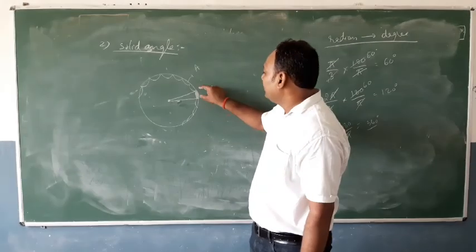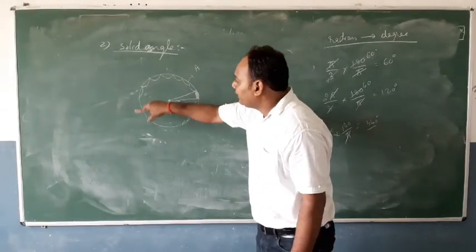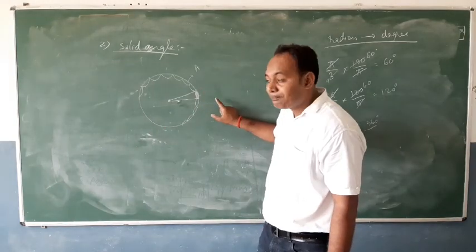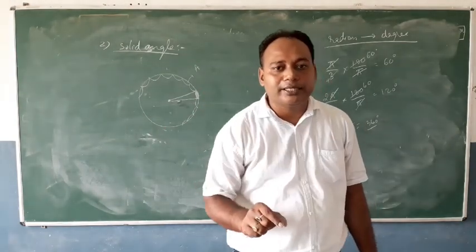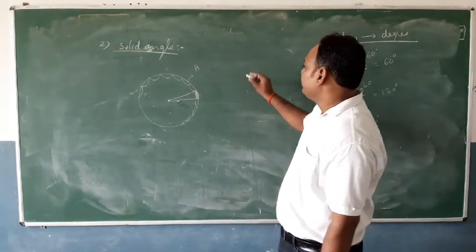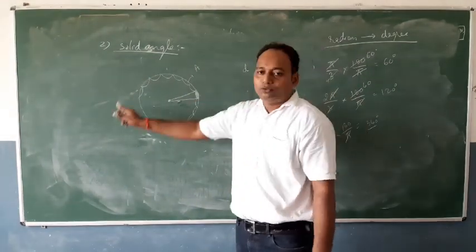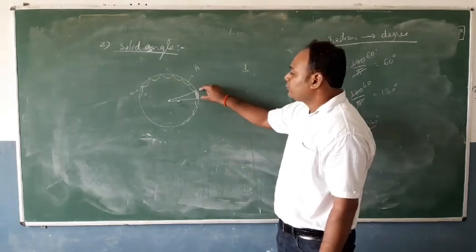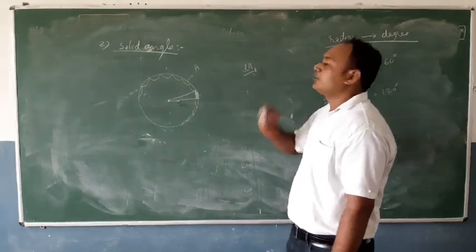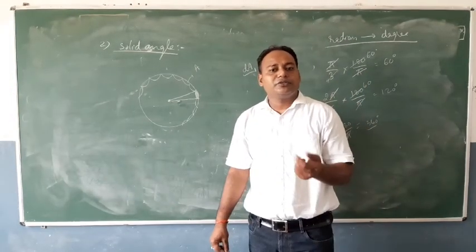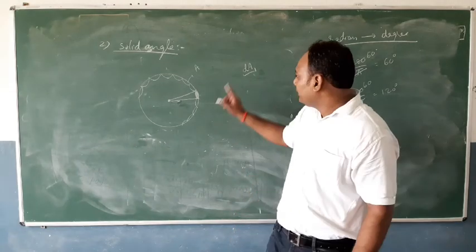The area illuminated by the torch on the surface of the sphere is very small compared to the entire surface area. In physics, when we talk about a small portion of the area, we denote it as dA. When the whole surface area is capital A, a small portion is dA.